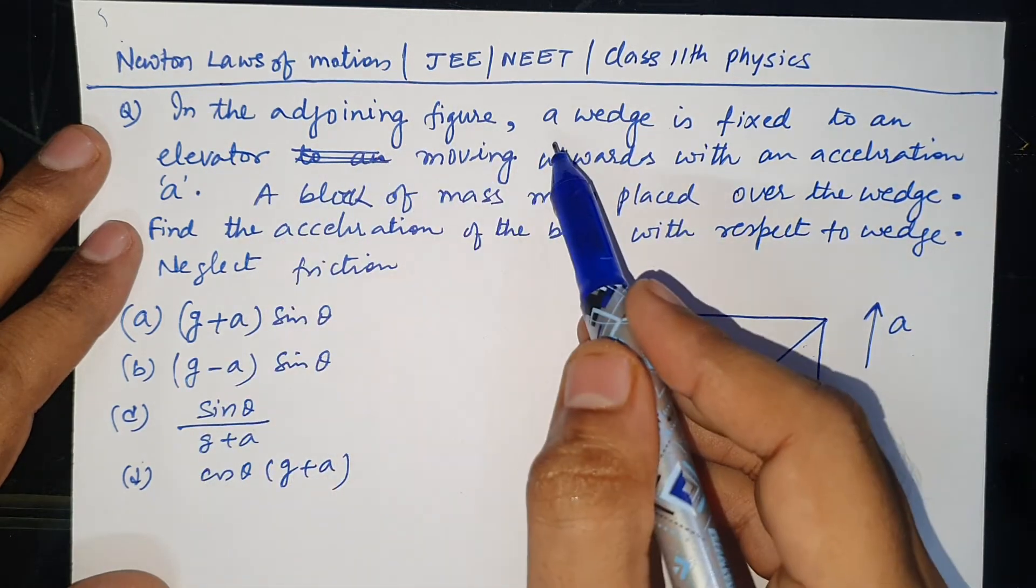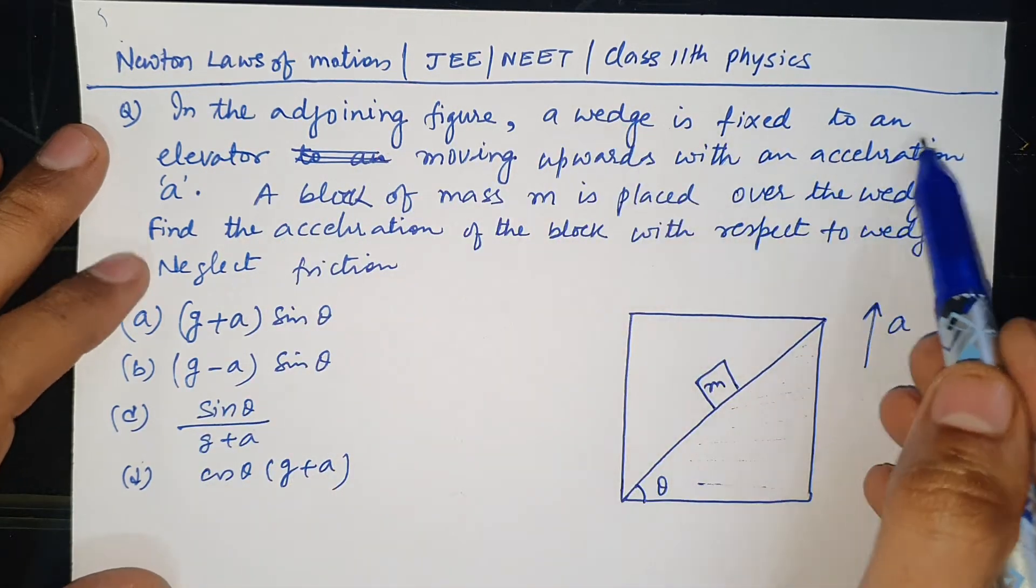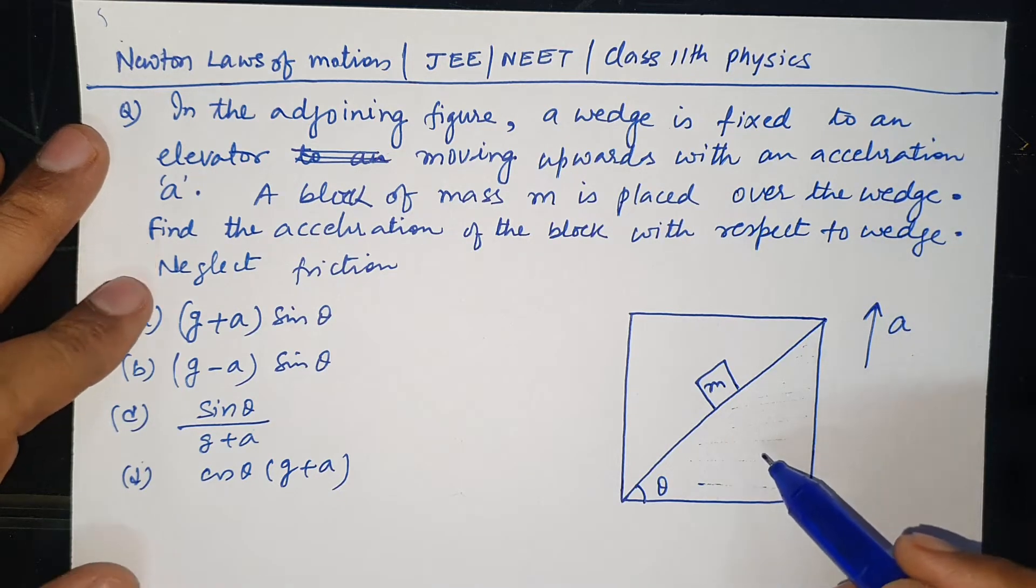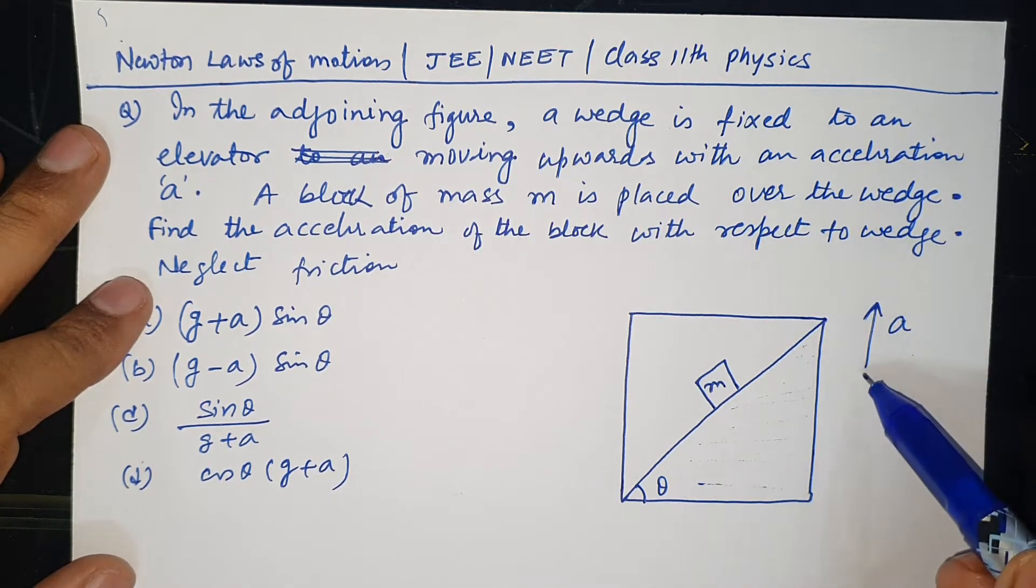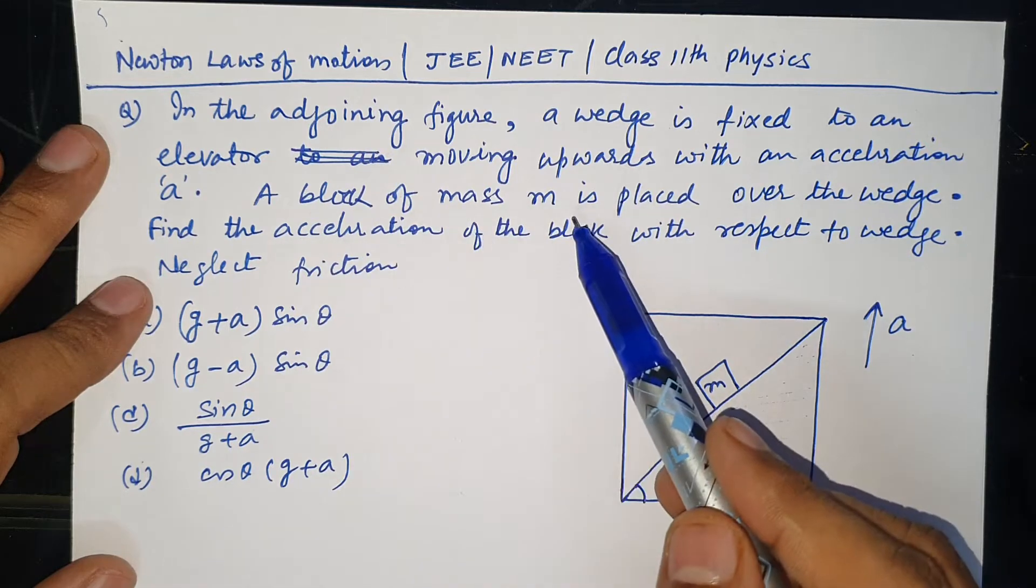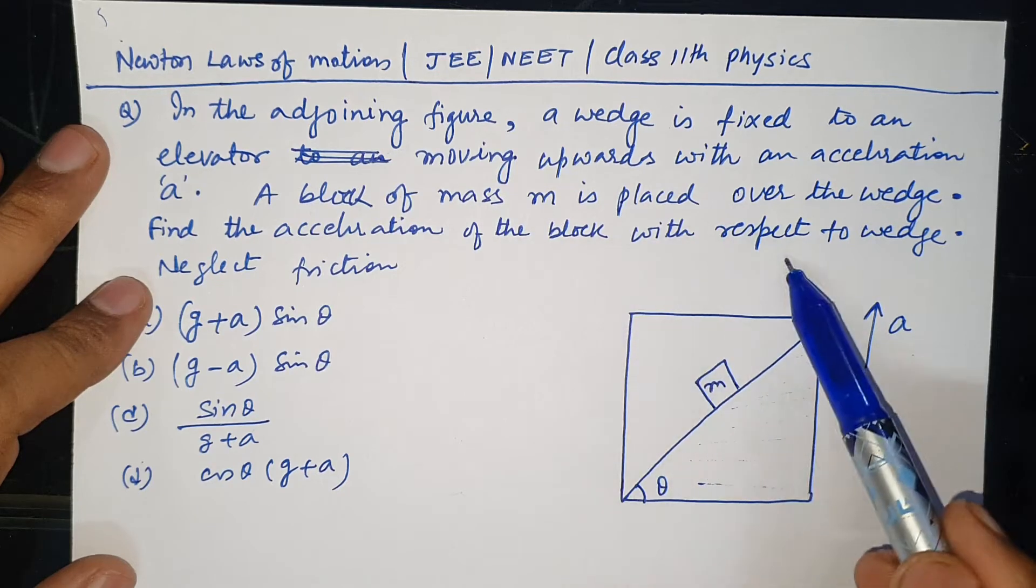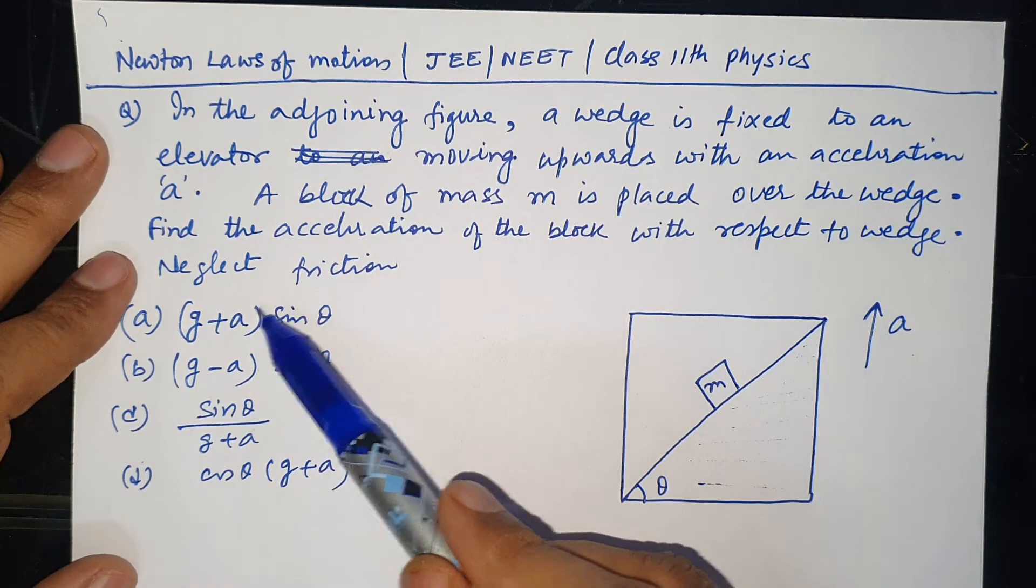In the adjoining figure, a wedge is fixed to an elevator moving upward with an acceleration A. A block of mass M is placed over the wedge. Find the acceleration of the block with respect to wedge. Neglect the friction.